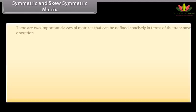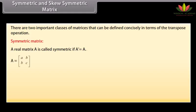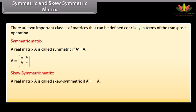Symmetric and skew-symmetric matrix: There are two important classes of matrices that can be defined concisely in terms of the transpose operation. A real matrix A is called symmetric if transpose of A equals A. A is a general 2×2 symmetric matrix. A real matrix A is called skew-symmetric if transpose of A equals minus A. Here A is a general 2×2 skew-symmetric matrix.